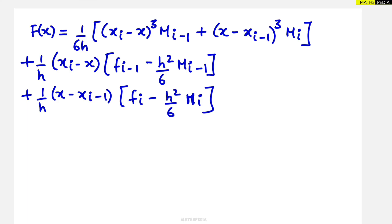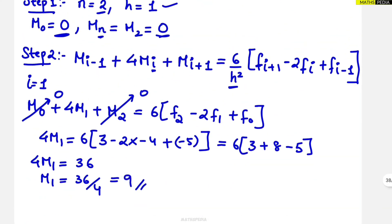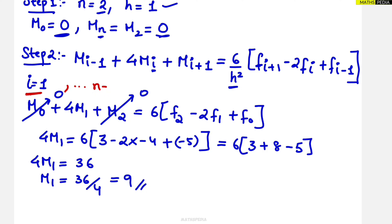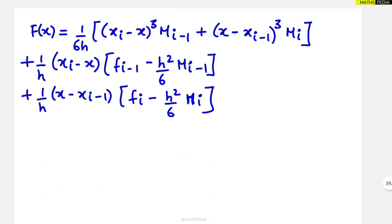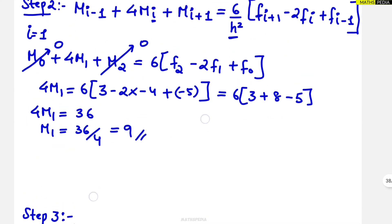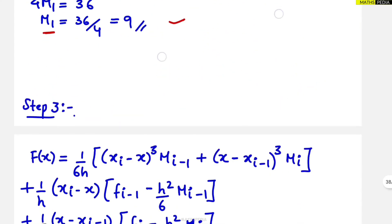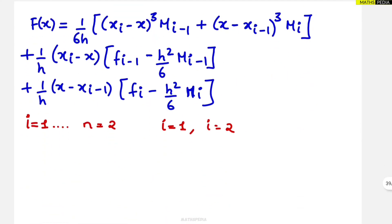For substituting in this cubic spline formula, i starts from one and goes till n — so i equals one and i equals two, giving two substitutions. When i equals one we get the cubic spline function in the first interval (zero to one); when i equals two we get it in the second interval (one to two). There are two intervals and two substitutions accordingly.